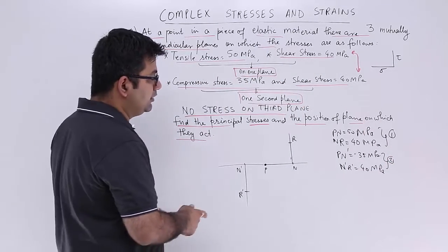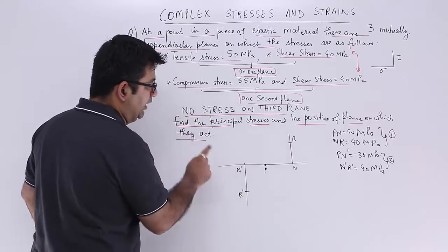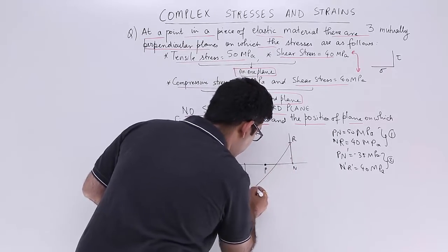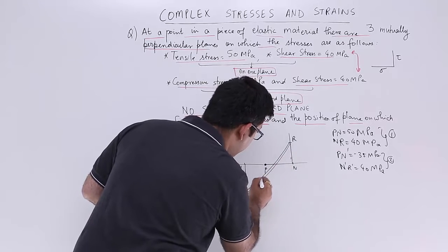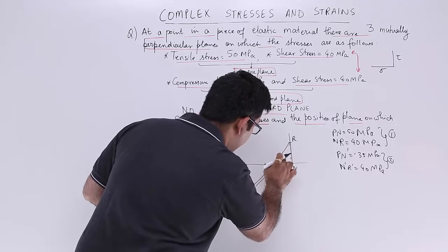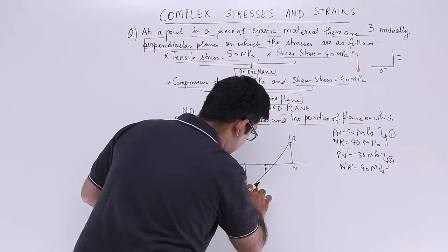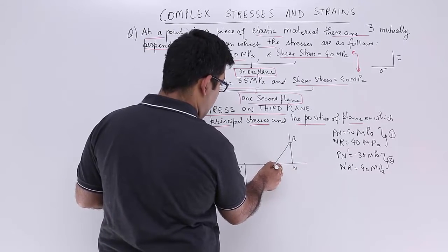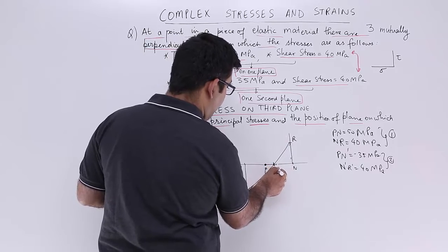Now what will I do? I will join the point r and r dash. So let's join these points. Let's join this point like this. So where it cuts the horizontal line I will name that point as point o.